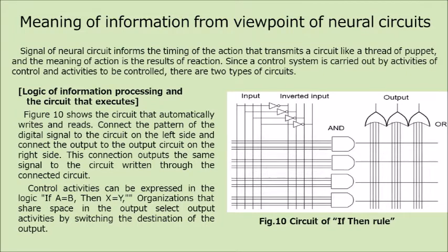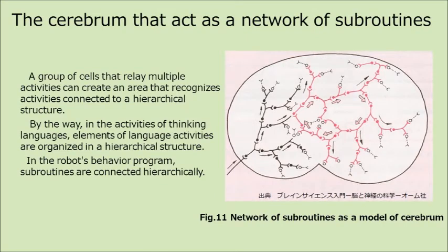Since a control system is carried out by activities of control and activities to be controlled, there are two types of circuits. Figure 10 shows the circuit that automatically writes and reads. Connect the pattern of the digital signal to the circuit on the left side and connect the output to the output circuit on the right side. This connection outputs the same signal to the circuit written through the connected circuit. Control activities can be expressed in the logic: if A equals B, then X is Y. Organizations that share space in the output select output activities by switching the destination of the output. A group of cells that relay multiple activities can create an area that recognizes activities connected to a hierarchical structure.